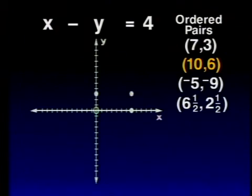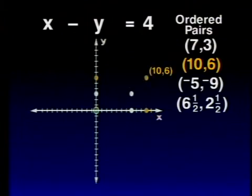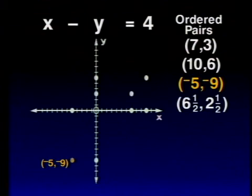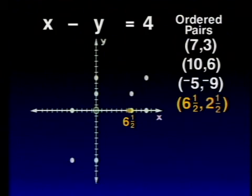How about the other solutions we found? Which point would represent the solution (10, 6)? X is 10 — 10 units to the right of 0 — and Y is 6 — 6 units up from 0. There it is. And what about (negative 5, negative 9)? X is negative 5, 5 units to the left of 0, and Y equals negative 9, 9 units down from 0. We also found the ordered pair (6 and 1 half, 2 and 1 half). X equals 6 and 1 half units to the right of 0, and Y equals 2 and 1 half units up from 0.